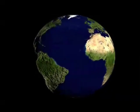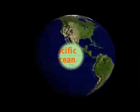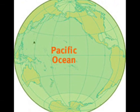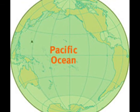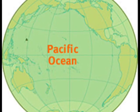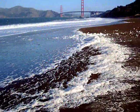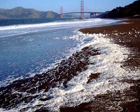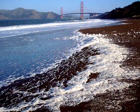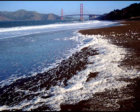Let's begin with the Pacific Ocean, the largest ocean on our Earth. The Pacific Ocean is located between North America and South America, and Asia and Australia. It is the biggest ocean on our planet, and the average depth of the Pacific Ocean is 14,000 feet.